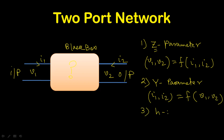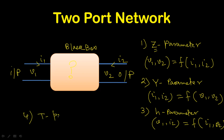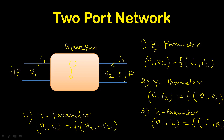The third is the hybrid parameter or H parameter, which we are going to discuss, where V1 and I2 are functions of I1 and V2. The last one is called the transmission parameter or T parameter, where V1 and I1 are functions of V2 and minus I2. Those are four commonly used parameters to describe this black box — representing the relation between input side voltage-current and output side voltage-current.